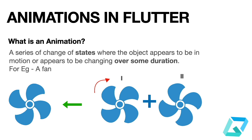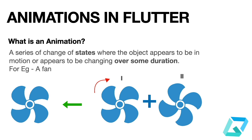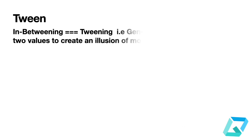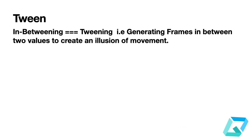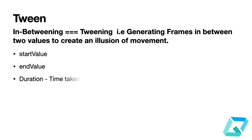The most used word in animation is 'tween.' Let's understand what tween is and how it comes into the picture. Tween stands for 'in between' — it's about generating frames in between two values to create an illusion of motion. As we saw in the fan example, we had two positions and based on some duration, rotating between them created the illusion that the fan was moving.